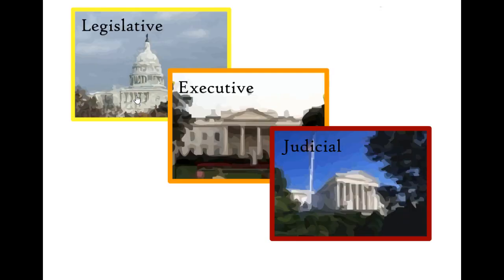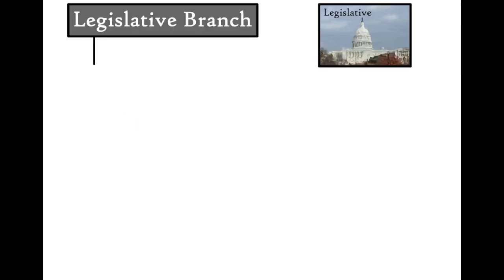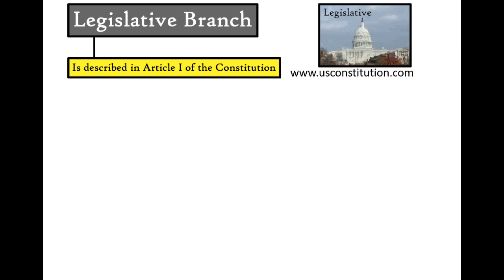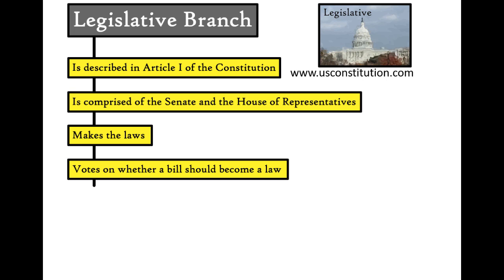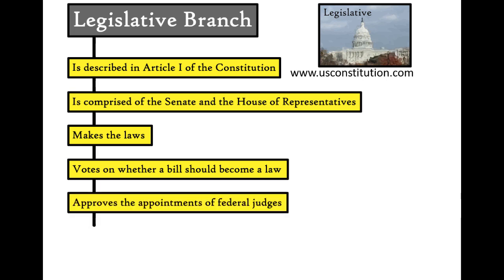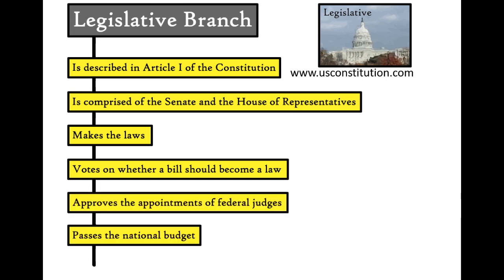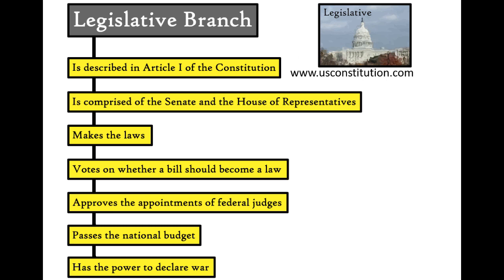The Legislative Branch is described in Article I of the Constitution. It is comprised of the Senate and the House of Representatives. It makes the laws, votes on whether a bill should become a law, approves the appointments of federal judges, passes the national budget, and has the power to declare war.